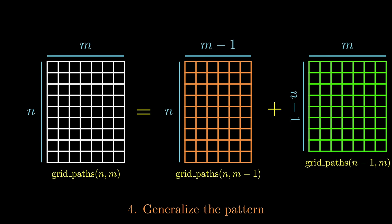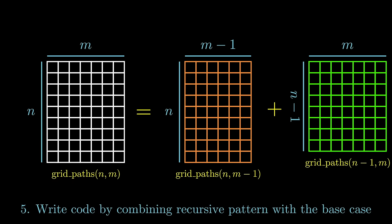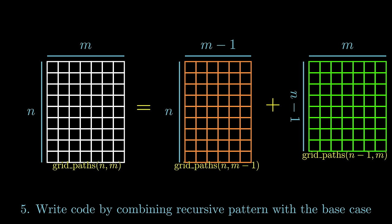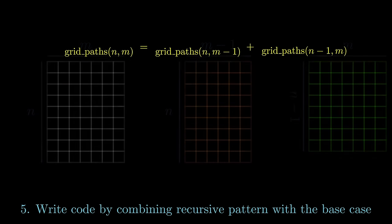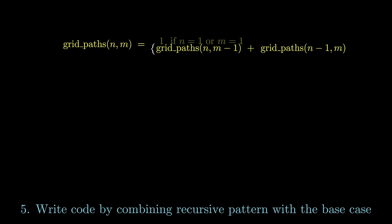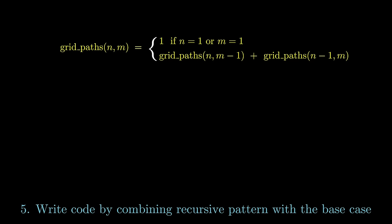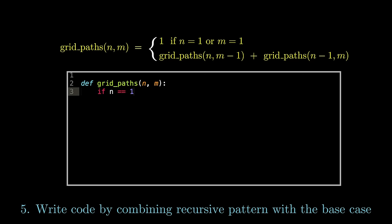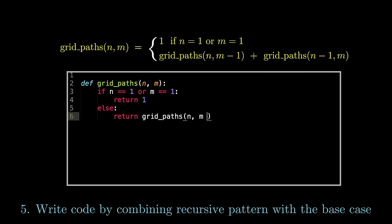So let's now generalize this pattern. We can find the total number of unique paths in an n by m grid by first finding all the unique paths from the n by m-1 grid — each of these paths correspond to a path in the n by m grid since all we do is move one unit to the right. And the remaining paths can be found by finding all the unique paths in an n-1 by m grid, where we take each path, add one unit down, and get the corresponding path in the n by m case. Once we've found this general relationship, the last thing we do is take this general pattern, bring it together with the base case, and write code. The corresponding code for such a seemingly overwhelming problem ends up being remarkably simple and elegant.